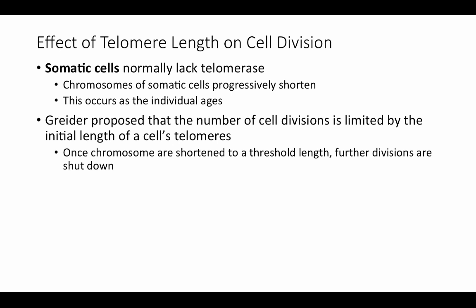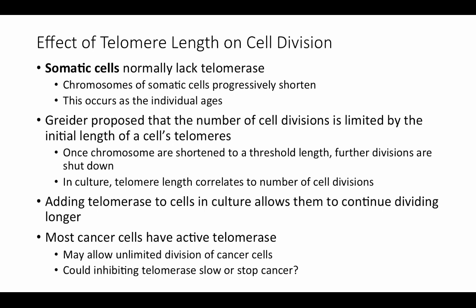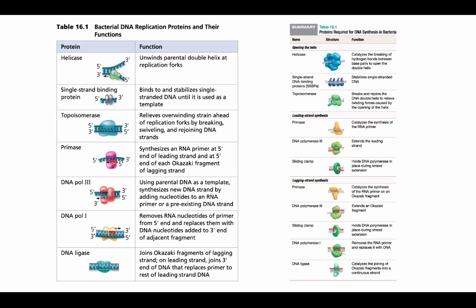Somatic cells — the non-gamete cells of the body — normally lack telomerase, so their chromosomes progressively shorten with each cell division as the individual ages. Scientist Greider proposed that the number of cell divisions is limited by the initial length of a cell's telomeres: once chromosomes shorten to a threshold length, further divisions are shut down. Experiments in cell culture support this — telomere length correlates with the number of cell divisions a cell will undergo, and adding telomerase to cultured cells allows them to divide beyond that limit. Importantly, most cancer cells have active telomerase, which allows unregulated division and tumor production — making telomerase inhibition a potential cancer therapy.